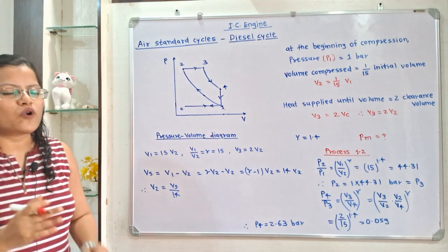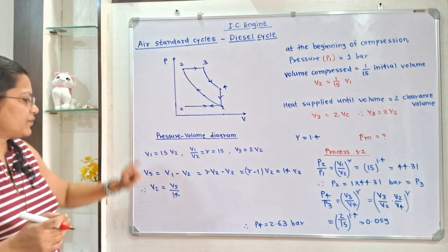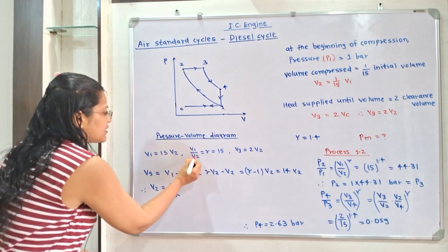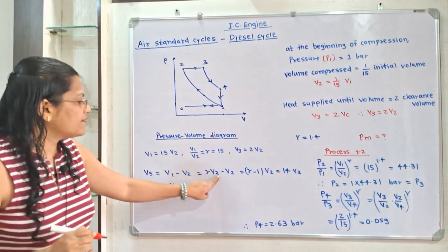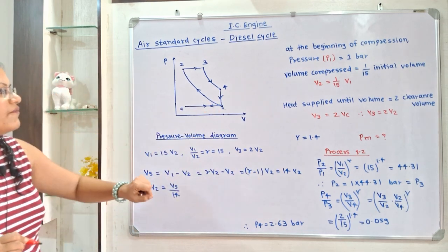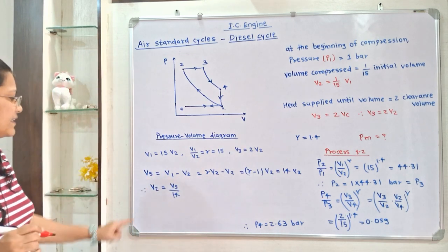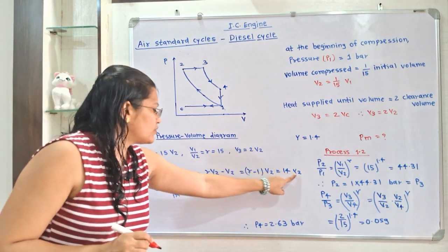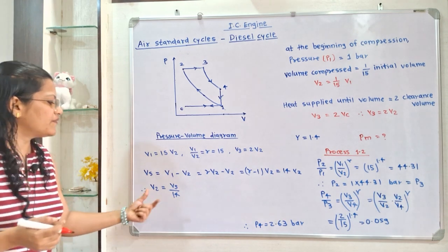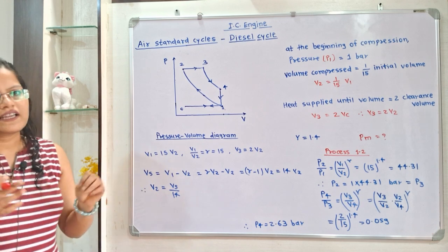How to calculate the swept volume? Swept volume Vs = V1 − V2. Since V1 = R·V2, we get Vs = R·V2 − V2 = (R − 1)V2. With R = 15, Vs = 14V2. Therefore V2 = Vs/14. This gives the relation between swept volume and V2, where V2 is the clearance volume.